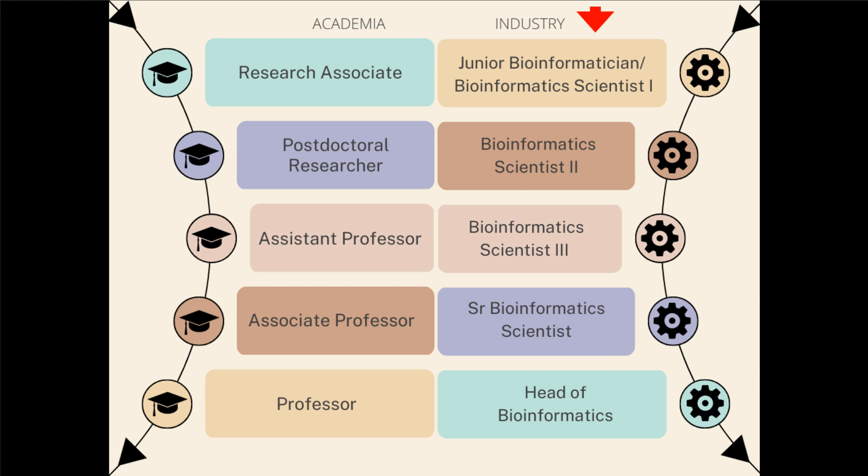On the professor track you become an assistant professor, then associate professor, and eventually a full professor. In industry there is also a clear path of progression: you start off as a junior bioinformatics scientist and work your way up through the ranks — bioinformatics scientist levels one, two, three; titles vary by company — and you can eventually move into management or laterally into a more engineering-focused role. It takes longer to climb the academic ladder because there are prerequisites, like a PhD and postdoc experience, which are not necessarily required in industry — though a PhD does help you advance faster.